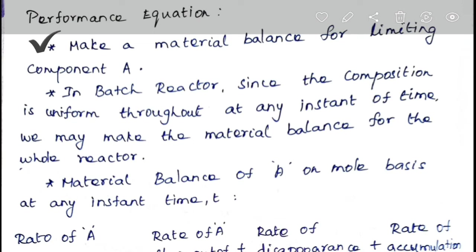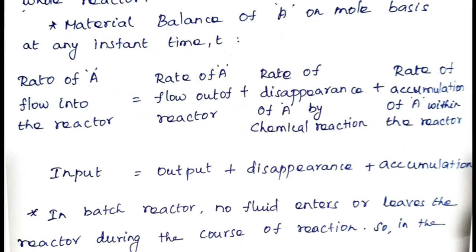In a batch reactor, at any instant of time the composition is uniform throughout the reactor, so we make the material balance for the whole reactor. The material balance of limiting component A on a mole basis at any instant time t is: rate of flow of A into the reactor = rate of flow of A out + rate of disappearance of A by chemical reaction + rate of accumulation of A within the reactor.